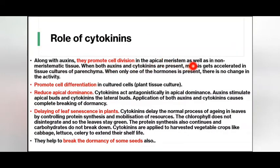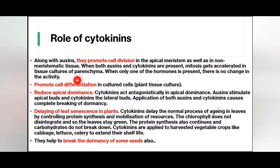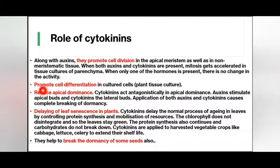Role of cytokinin: along with auxins, cytokinin promotes cell division in the apical meristem as well as in non-meristematic tissue. When both auxins and cytokinin are present, mitosis gets accelerated in tissue cultures of parenchyma. When only one of the hormones is present, there is no change in the activity. Cytokinin also promotes cell differentiation in cultured cells.